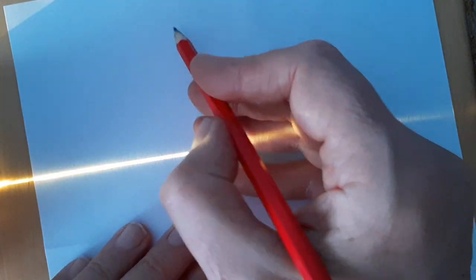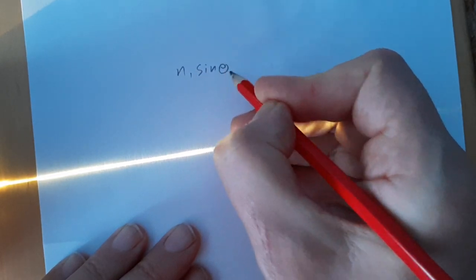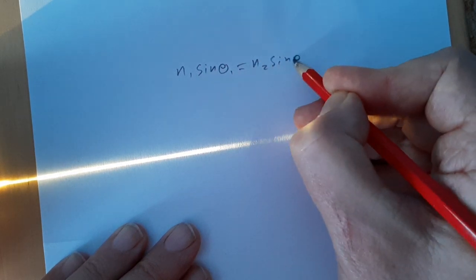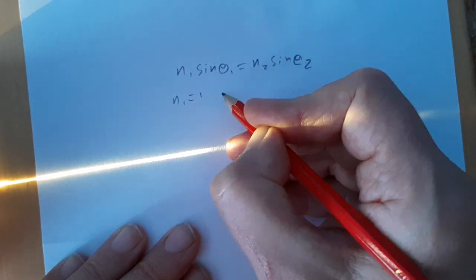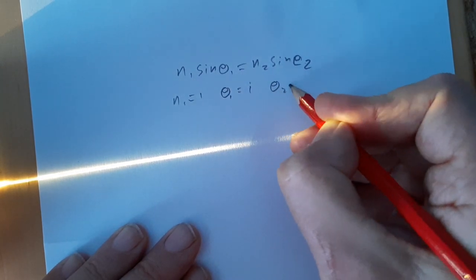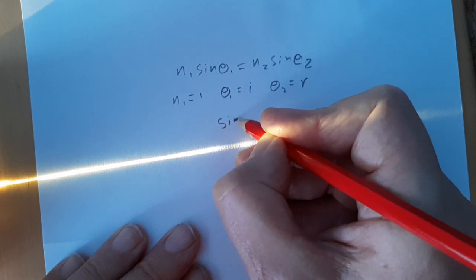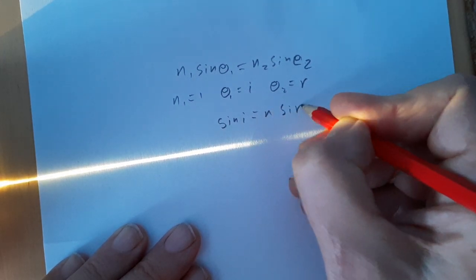Now, what are we going to do? Well, our equation is N₁ sin θ₁ equals N₂ sin θ₂. But we can simplify that somewhat because we know N₁ is equal to 1. We're going to say θ₁ is equal to the angle of incidence. And θ₂ is equal to the angle of refraction. So, we can say sin the angle of incidence is equal to N sin the angle of refraction.